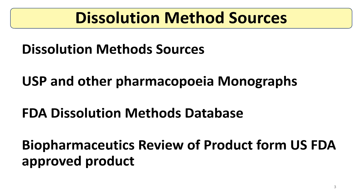Generally, the Dissolution Method is taken from the USP Monograph or the FDA Dissolution Database, called the OGD Database. Sometimes the biopharmaceutics review of the approved product is taken from the US FDA site and referred to as a starting point for Dissolution Method development. The main sources are USP and other pharmacopoeia monographs, the FDA Dissolution Method database, and the biopharmaceutics review of the drug product — where the innovator or reference product manufacturer provides information regarding the Dissolution Method.